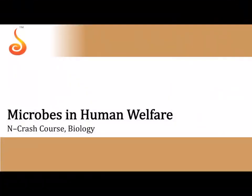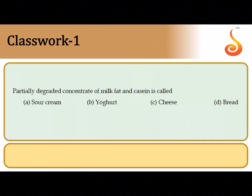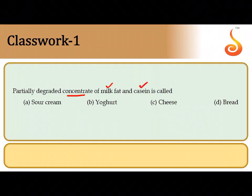Welcome to the NEET crash course. Let us go through some practice questions starting with the chapter Microbes in Human Welfare. The first question talks about partially degraded concentrate of milk fat and casein. Casein is the protein, so this combination of milk fat and protein is collectively referred to as cheese. The correct answer is option C.